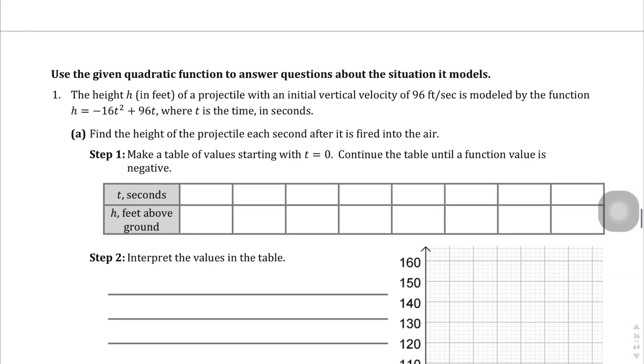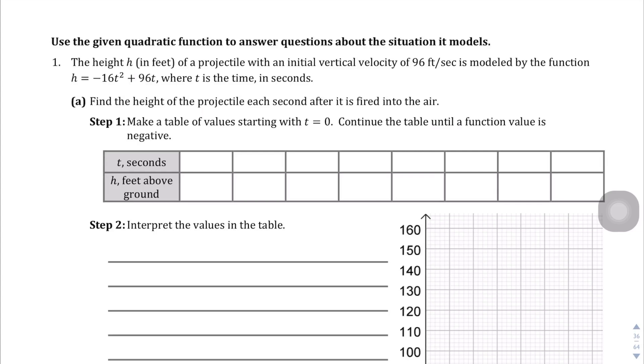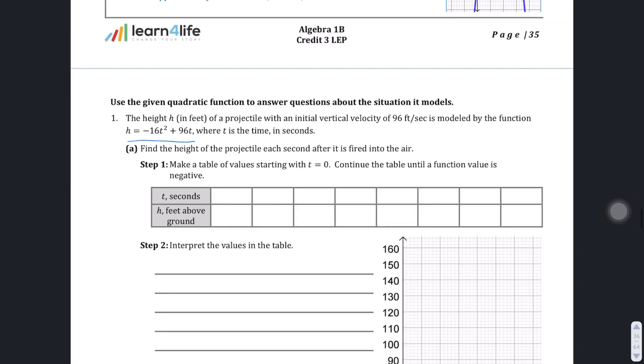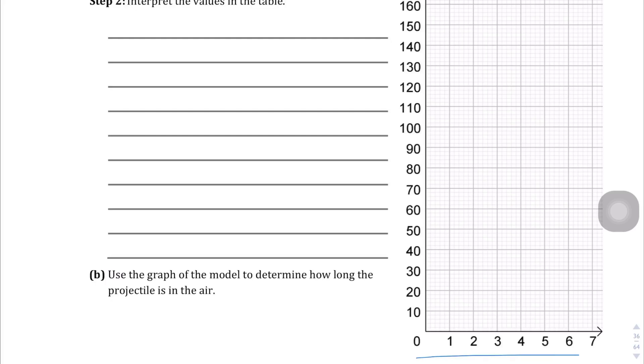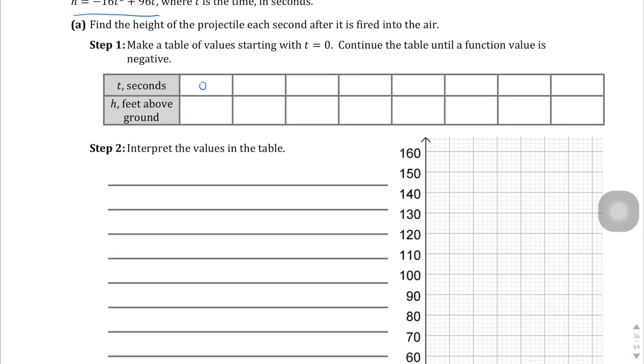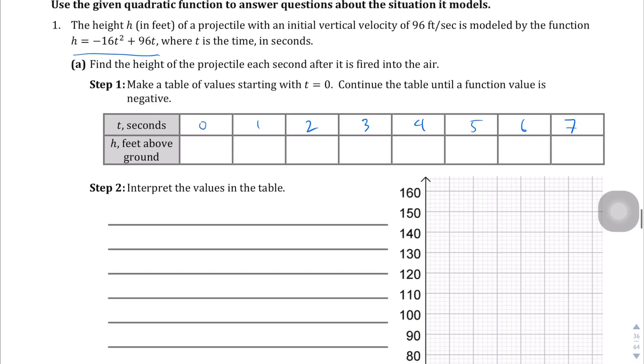You can read that explain section on your own, but now we're going to solve questions that have a context to them. We have the height in feet of a projectile with an initial velocity of 96 feet per second modeled by the function h equals negative 16t squared plus 96t, where t is the time in seconds. Question A wants to find the height of the projectile each second after it's fired into the air. Looking at the graph, it shows 0 through 7, so those are the domain values we'll use: 0, 1, 2, 3, 4, 5, 6, and 7. We're going to plug those values into the equation to get the resulting height values. Let's plug in 0, and 0 is going to scrub everything clean. Anything times 0 is 0.